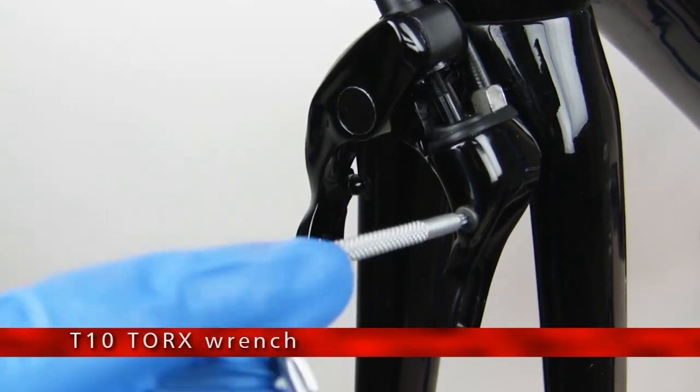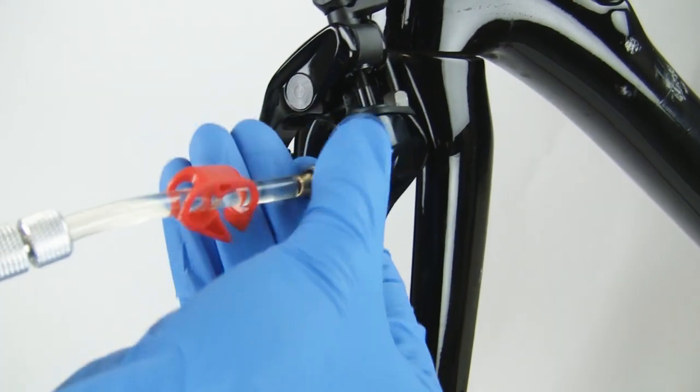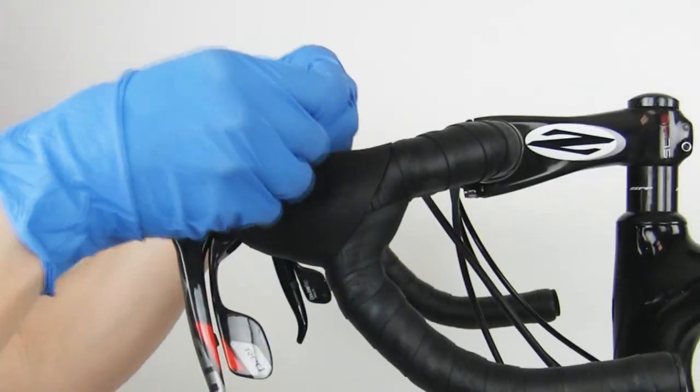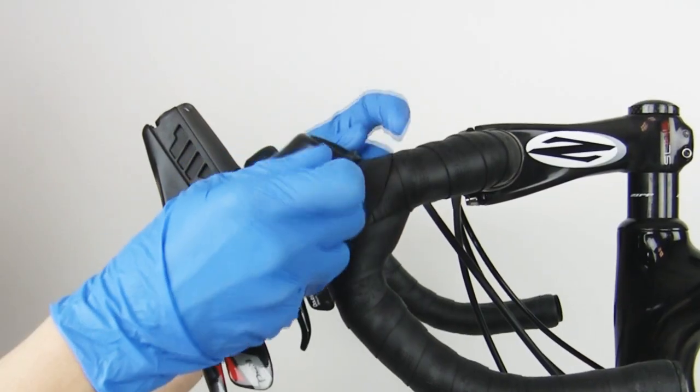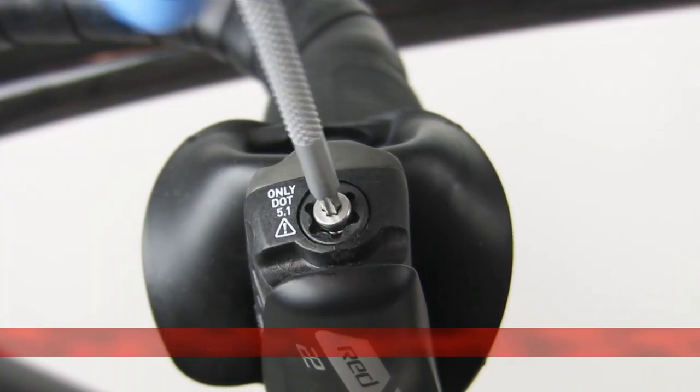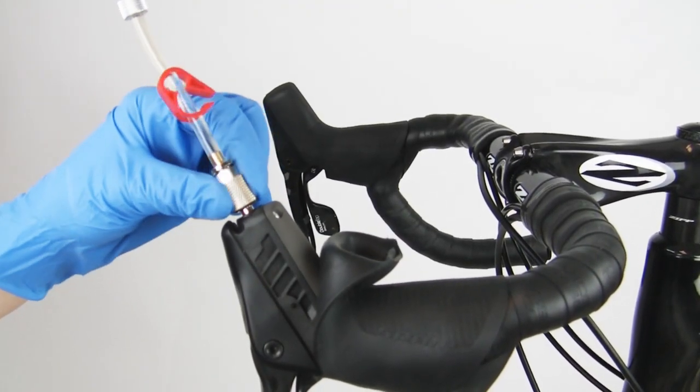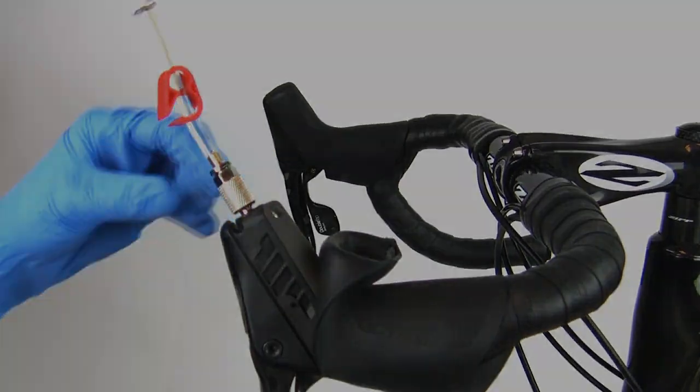Remove the caliper bleed port screw. Thread the half-full syringe into the caliper bleed port. Pull the lever hood back to expose the bleed port. Remove the lever bleed port screw. Thread the other syringe into the lever bleed port. Wipe off any brake fluid that may drip from the bleed port.